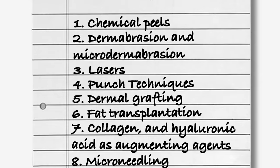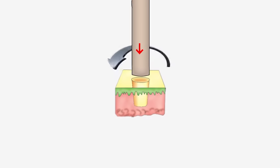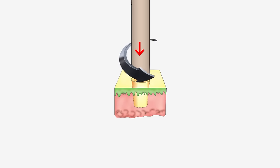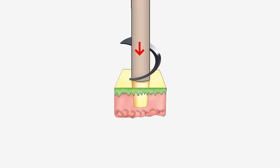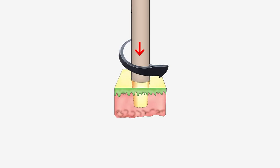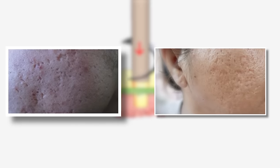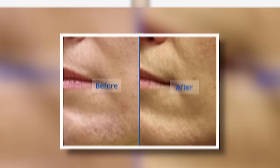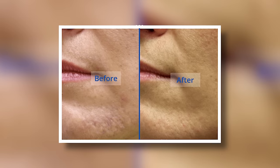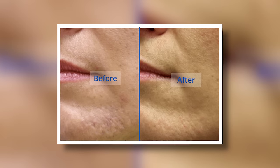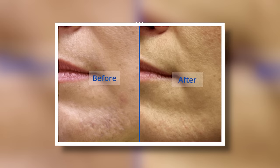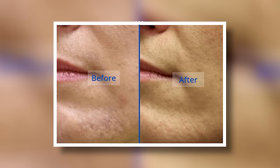Number four for the treatment of atrophic scars is punch techniques. Using punch excision, the acne scar is surgically removed through a surgical tool that matches the size of the scar; the remaining wound is closed with a stitch. Punch excision is ideal for revising deep ice pick scars and narrow deep boxcar scars, usually under three millimeters. It effectively turns an indented scar or hole into a flat linear scar. These flat linear scars can then be further improved with laser resurfacing.